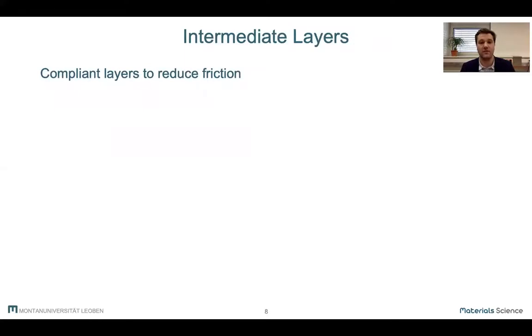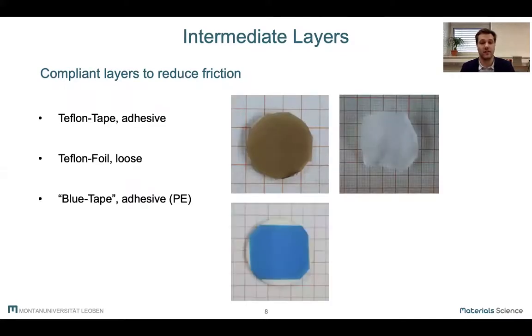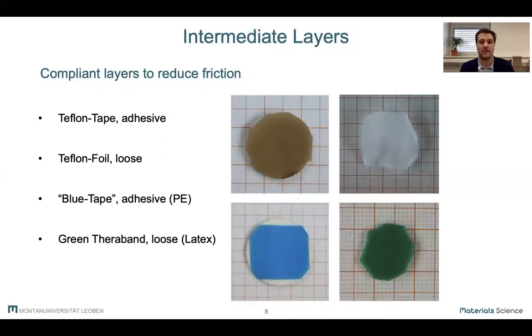For testing, we used four different intermediate layers to reduce friction: an adhesive Teflon tape, a loose Teflon foil, an adhesive polyethylene tape which will be called blue tape further on, and some thicker latex rubber which was sourced from Kraiburg. On the next slides, you will see different endings for the various data and set names, with the ending T referring to the Teflon tape, the ending BT referring to the blue tape, and the ending 2G referring to rubber on both sample sides. In the case of blue tape and T, the loose Teflon tape was used on the tension-loaded side.